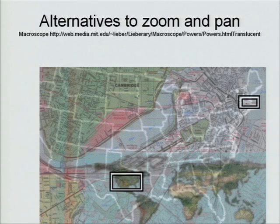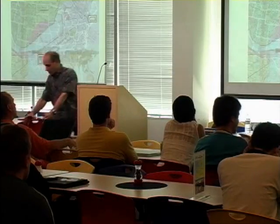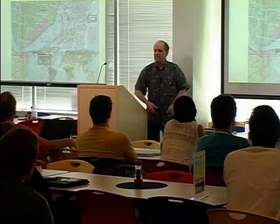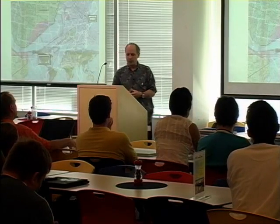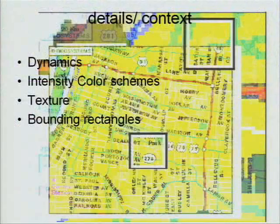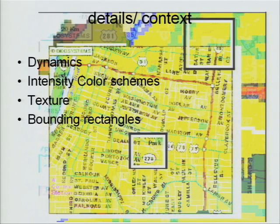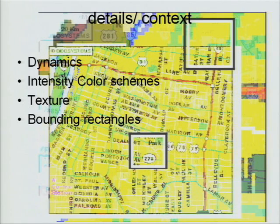A few years ago, my friend Henry Lieberman wrote a nice paper playing around with alternatives to zoom and pan. The typical thing people do to get from one place to another is zooming out and zooming in — that's how we keep oriented. But there are alternatives. He made something called Macroscope. It shows freeways, street signs, and specific places — three layers of resolution simultaneously: the country, the city, and the street. We can use dynamics, animation to separate different maps, color intensity schemes, texture — a street grid looks very different from a freeway interchange.